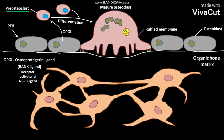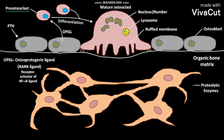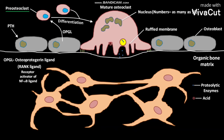Inside the mature osteoclast, lysosomes are present which contain proteolytic enzymes. The mature osteoclast is a multi-nucleated cell, as shown here, and may contain as many as 50 nuclei. During bone resorption, lysosomes containing proteolytic enzymes and other substances migrate towards the ruffled membrane and release the proteolytic enzymes over the bone surface. Mitochondria and secretory vesicles contain acids, which are released over the bone surface simultaneously with the proteolytic enzymes from the lysosomes.